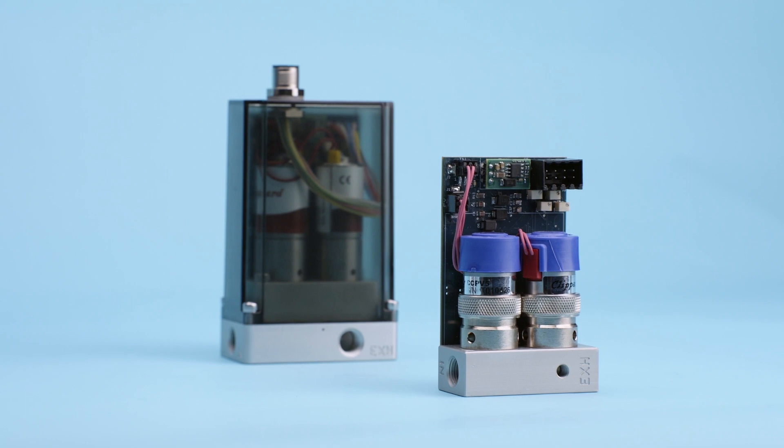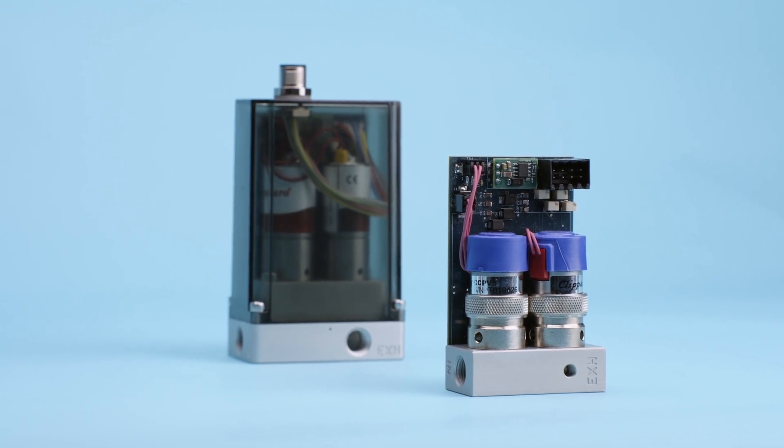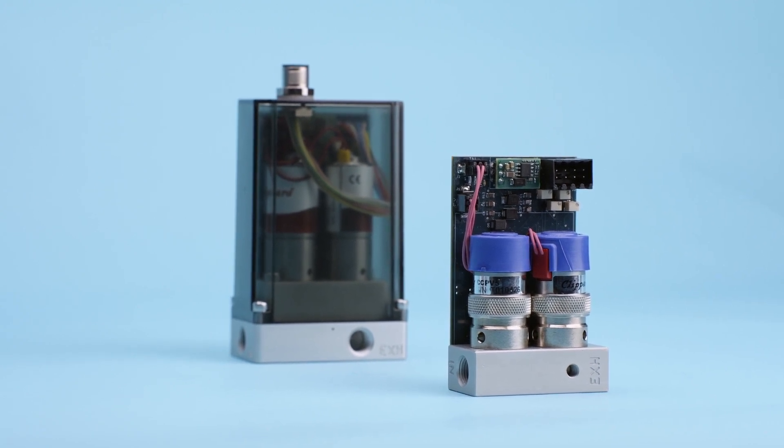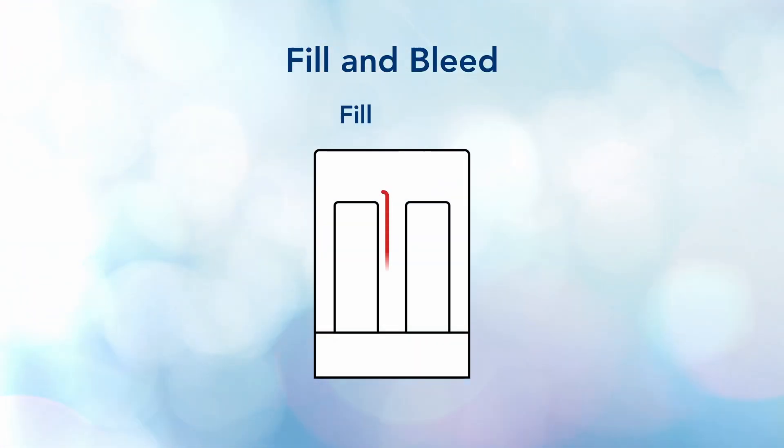Let's hone in on how to properly plumb the Corda CPC series when working with vacuum. The Corda CPC is a fill-and-bleed electronic pressure controller. One proportional valve is dedicated to filling, the inlet, and one proportional valve is dedicated to bleeding, exhaust.